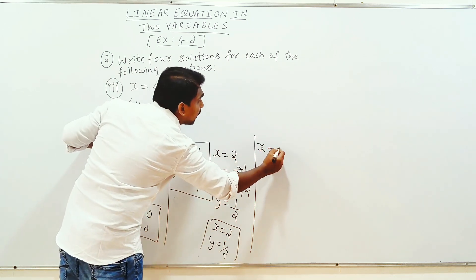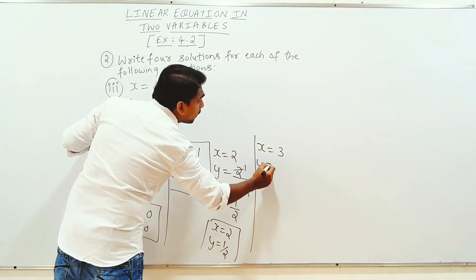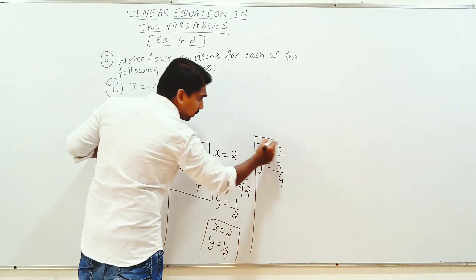Next, x equals 3. y equals 3 by 4. x equals 3, y equals 3 by 4. This is the fourth solution.